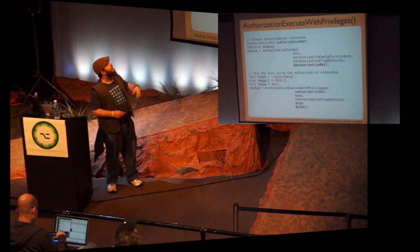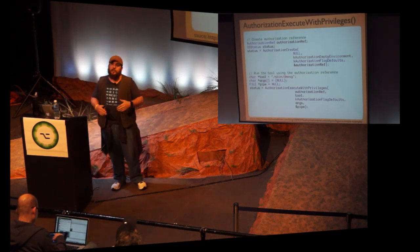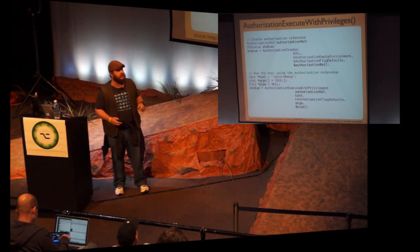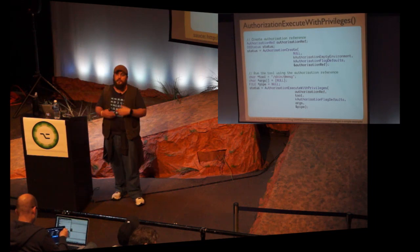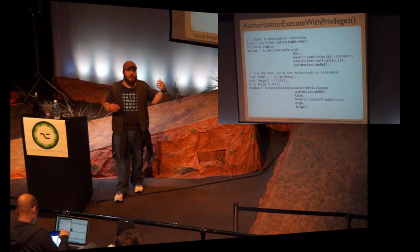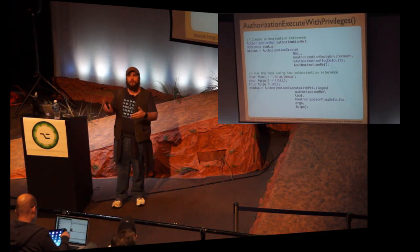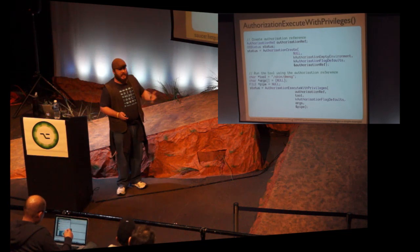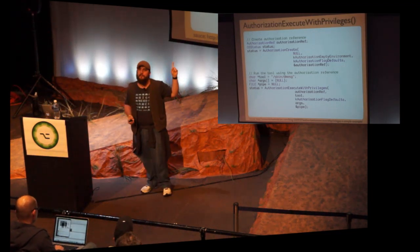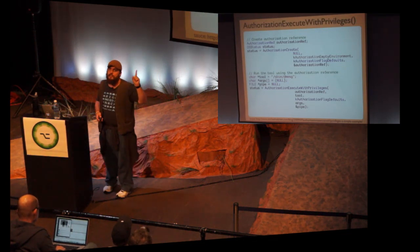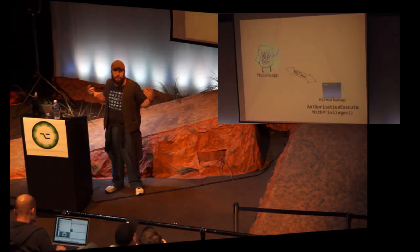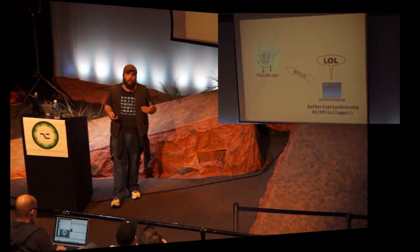I was looking at this other C API centered around two functions: AuthorizationCreate, where you pass in a couple of flags and create a request for authorization, and then AuthorizationExecuteWithPrivileges, where you pass in your authorization and execute a tool with superuser privileges — the user will just be asked. Except the snippet I took verbatim from a blog didn't work. There were a couple of additional arguments I needed. But more importantly, it had been deprecated since 10.7.